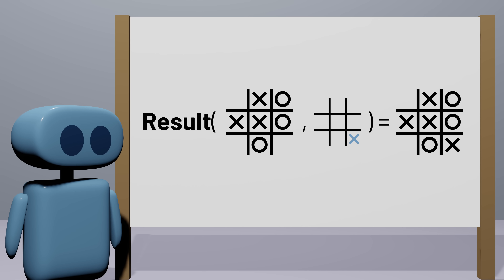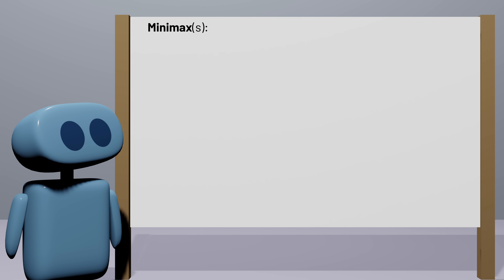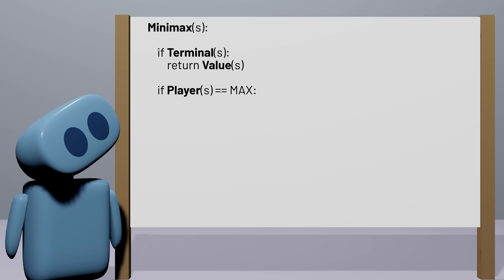With those pieces in mind, let's put together the Minimax algorithm. The algorithm will take any game state s and calculate the value of that state. If the state is a terminal state, then the game is over and we can calculate the result directly, for example by seeing who won or whether the game ended in a tie. Otherwise, we check whose turn it is. If it's the max player's turn, our goal is to make the value of the game as large as possible. We do that by checking all possible actions and figuring out which one will lead to the greatest value, even if the min player is playing optimally. Before considering any actions, we start by setting the value to negative infinity.